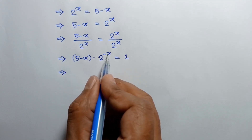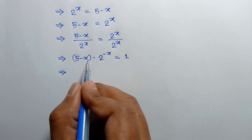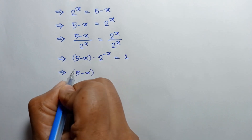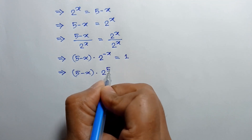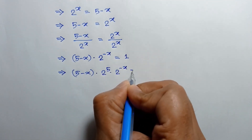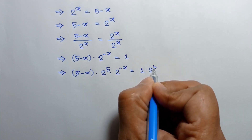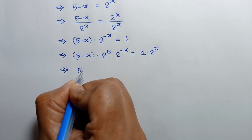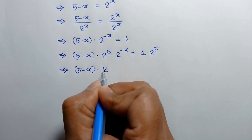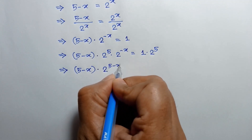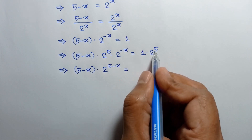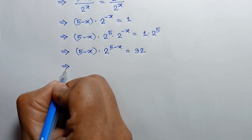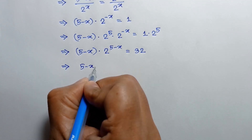To make the power and coefficient the same, we have to multiply both sides by 2 to the power 5. Multiplying both sides by 2 to the power 5, we can write (5 minus x) times 2 to the power 5 times 2 to the power negative x is equal to 32. This simplifies to (5 minus x) times 2 to the power (5 minus x) is equal to 32.